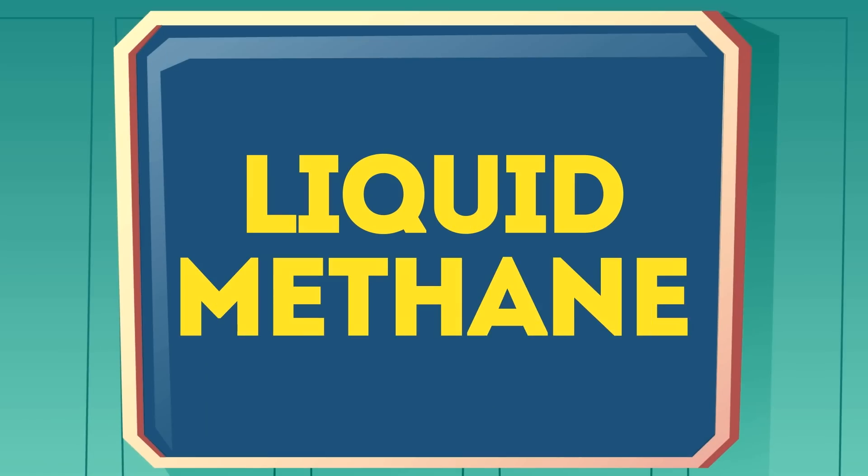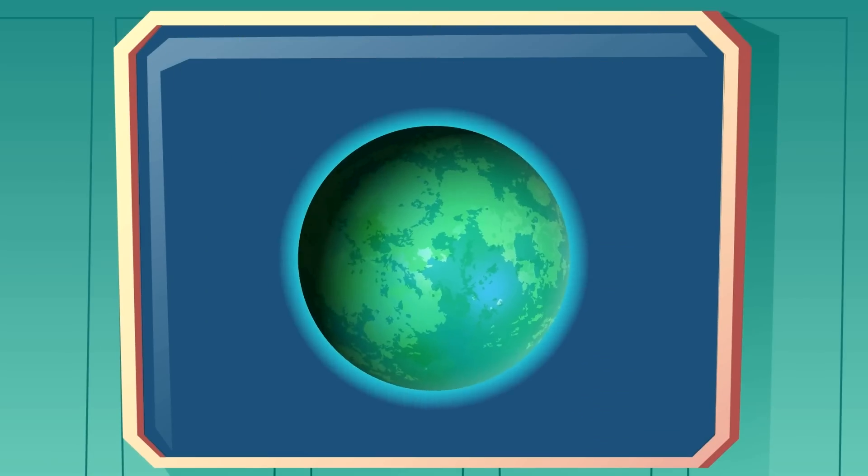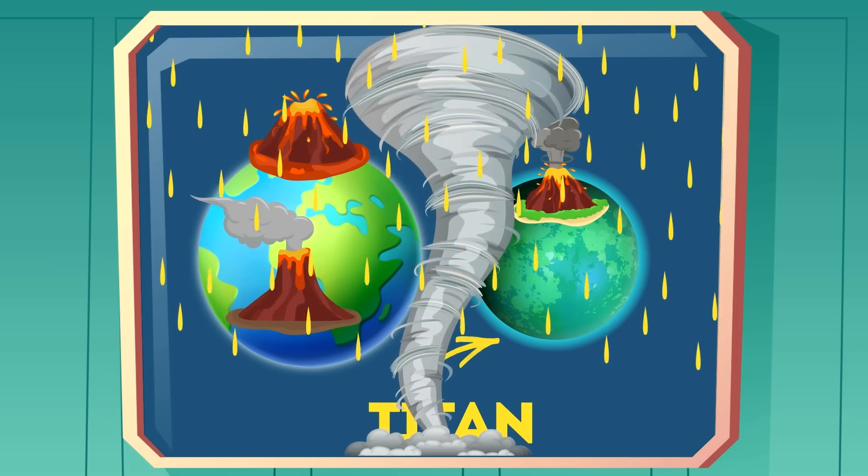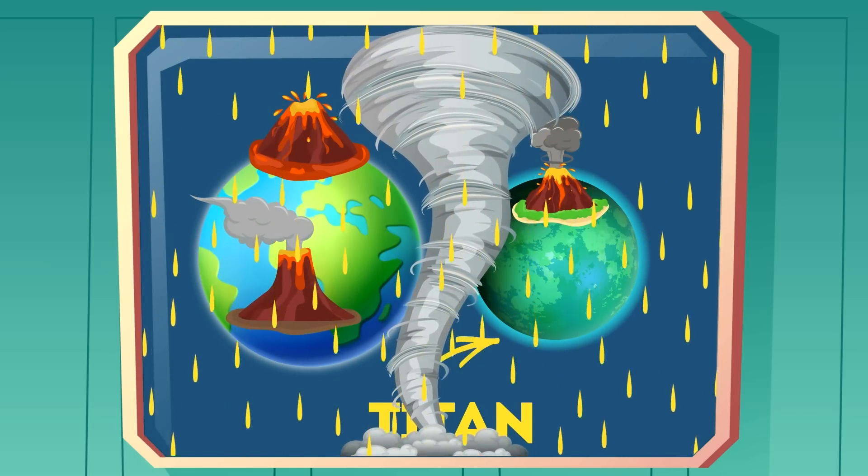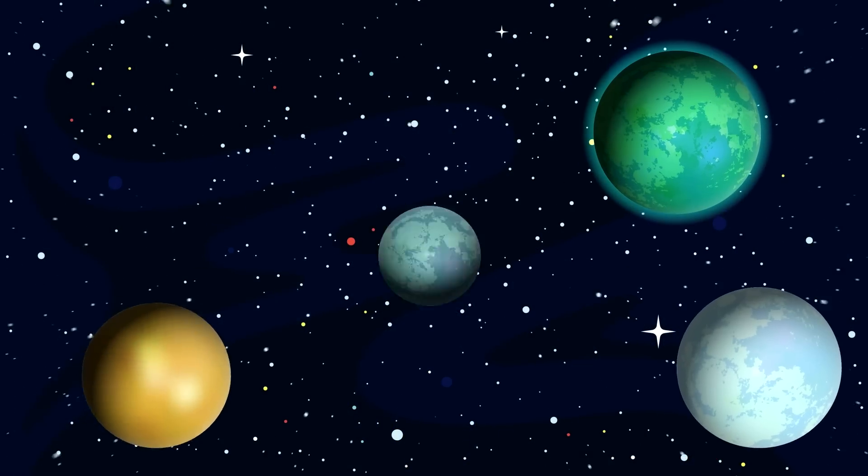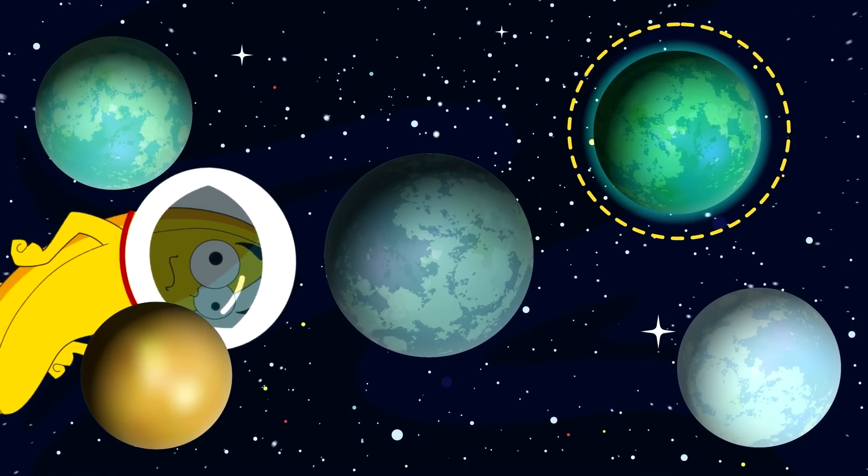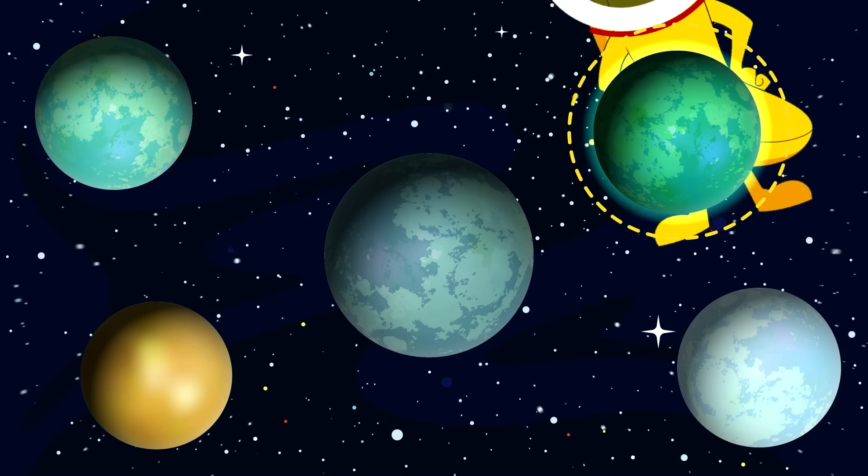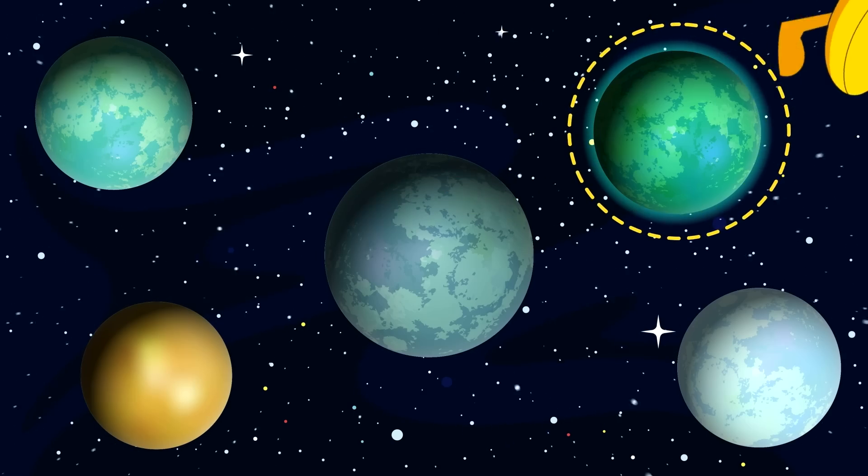Liquid methane. Saturn's moon Titan has many similarities with Earth, including volcanoes, wind, and rain that created a surface similar to Earth's. It is the only natural satellite known to have a dense atmosphere, and the only object other than Earth where clear evidence of stable bodies of surface liquid have been found.